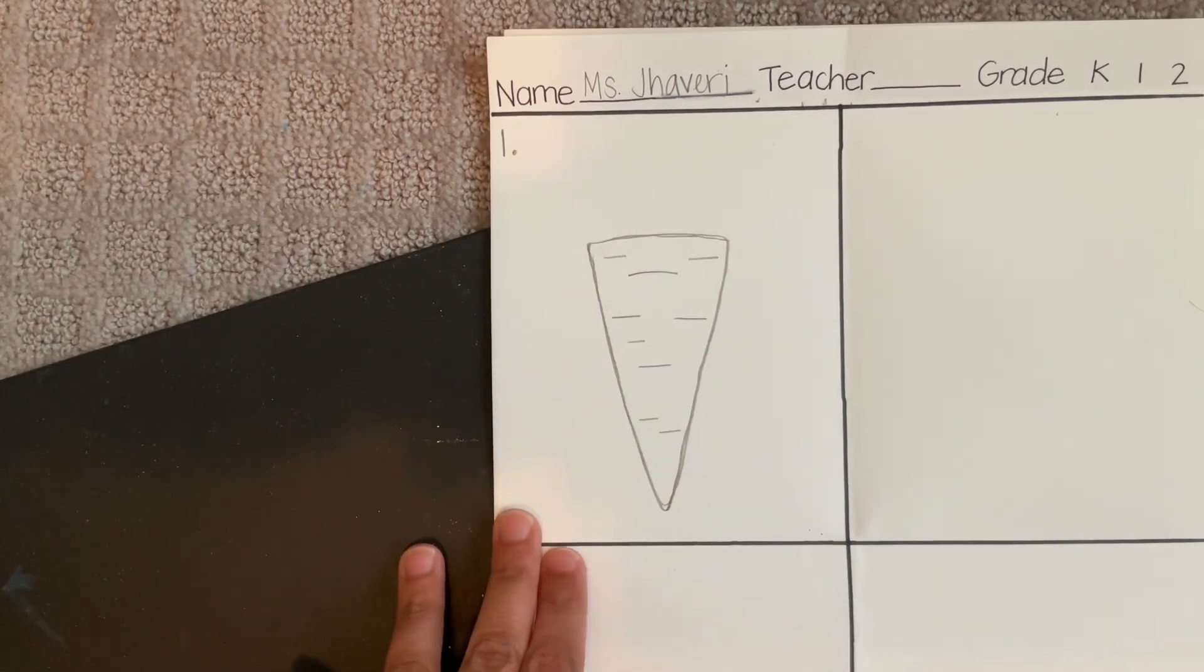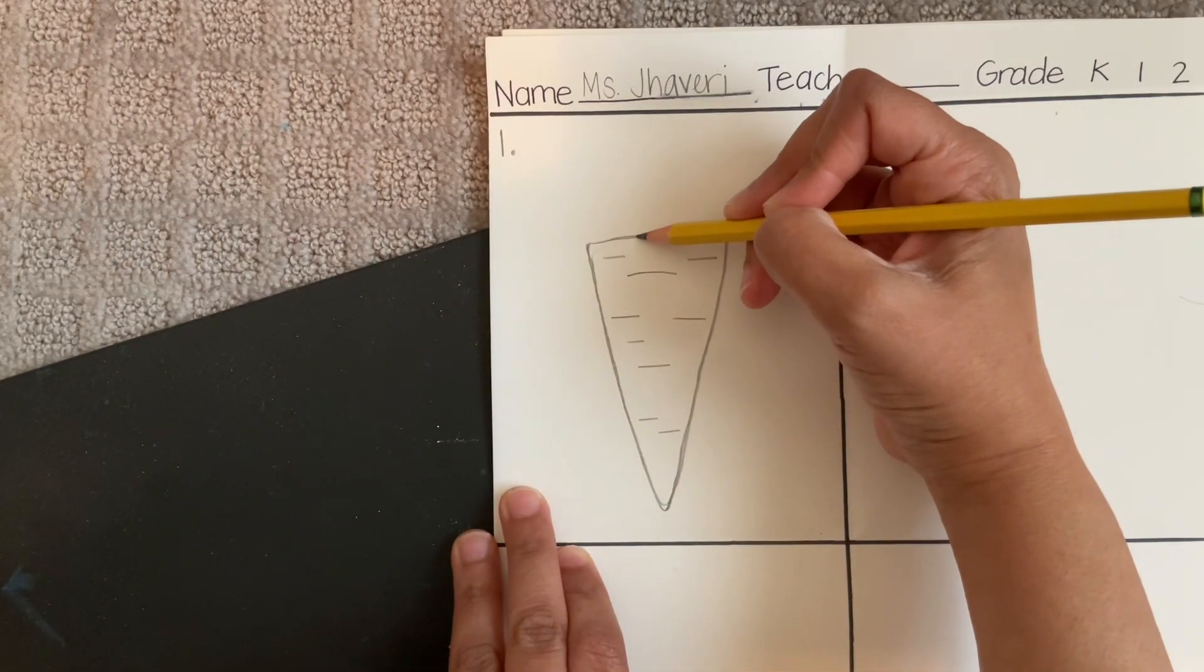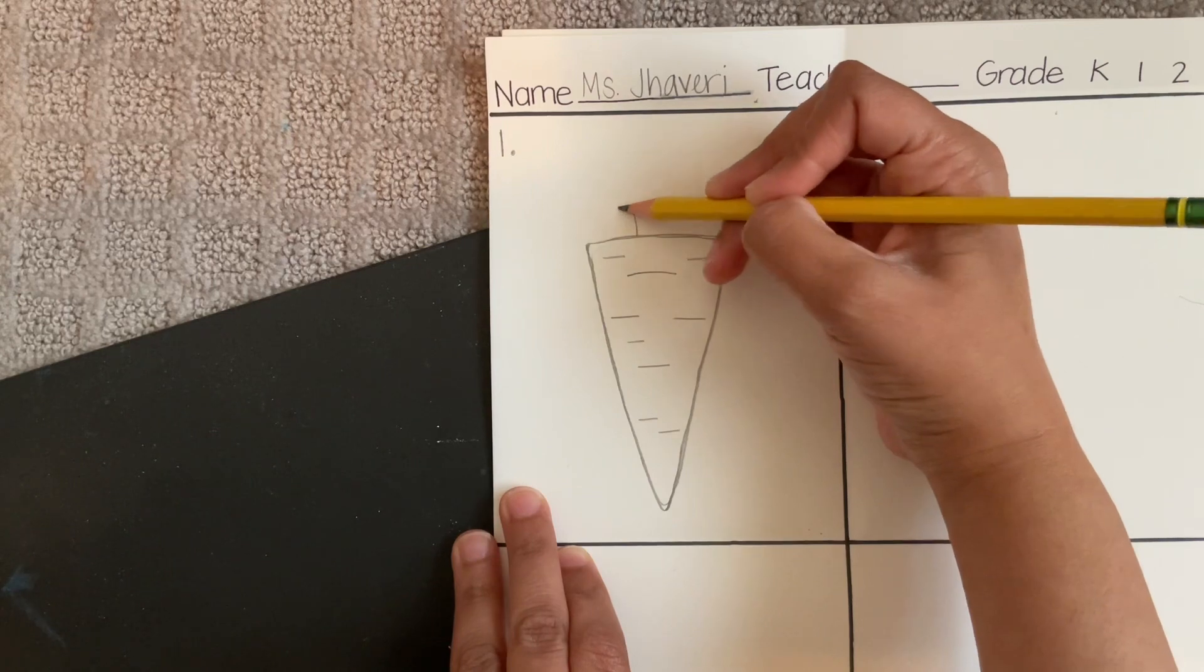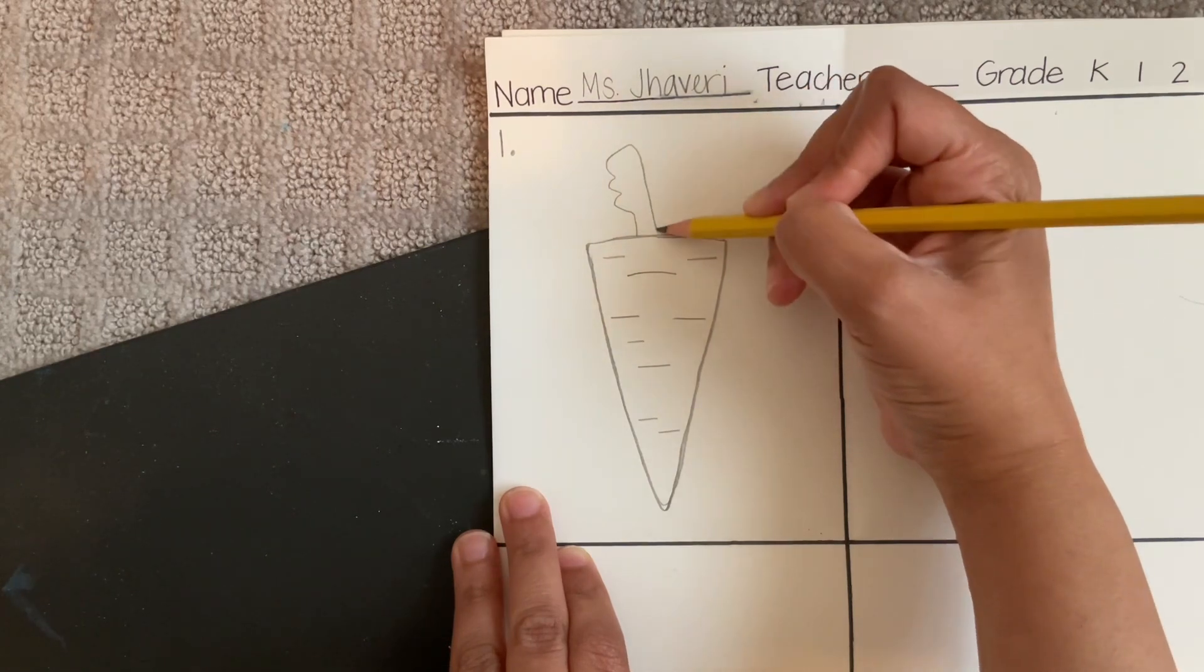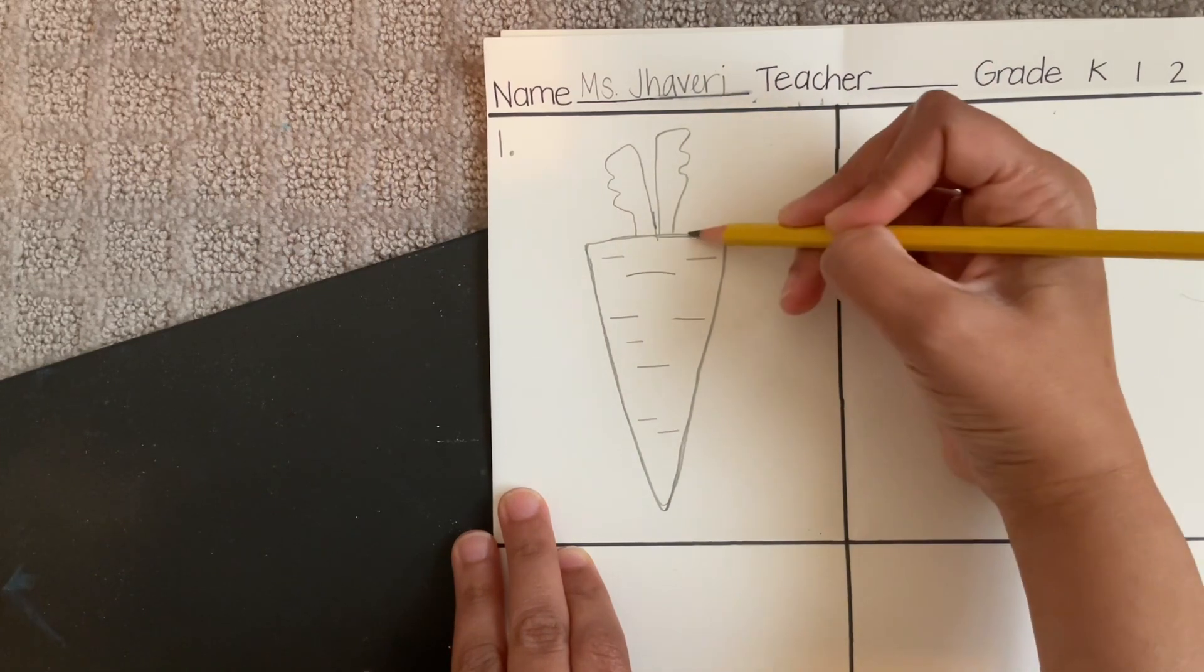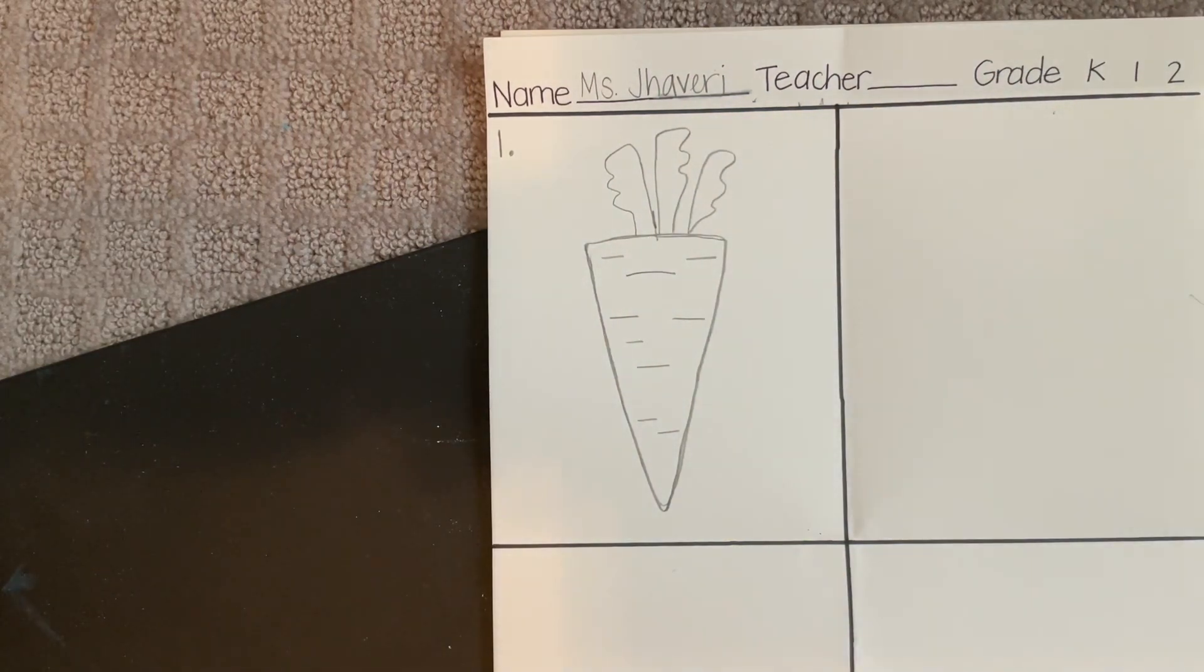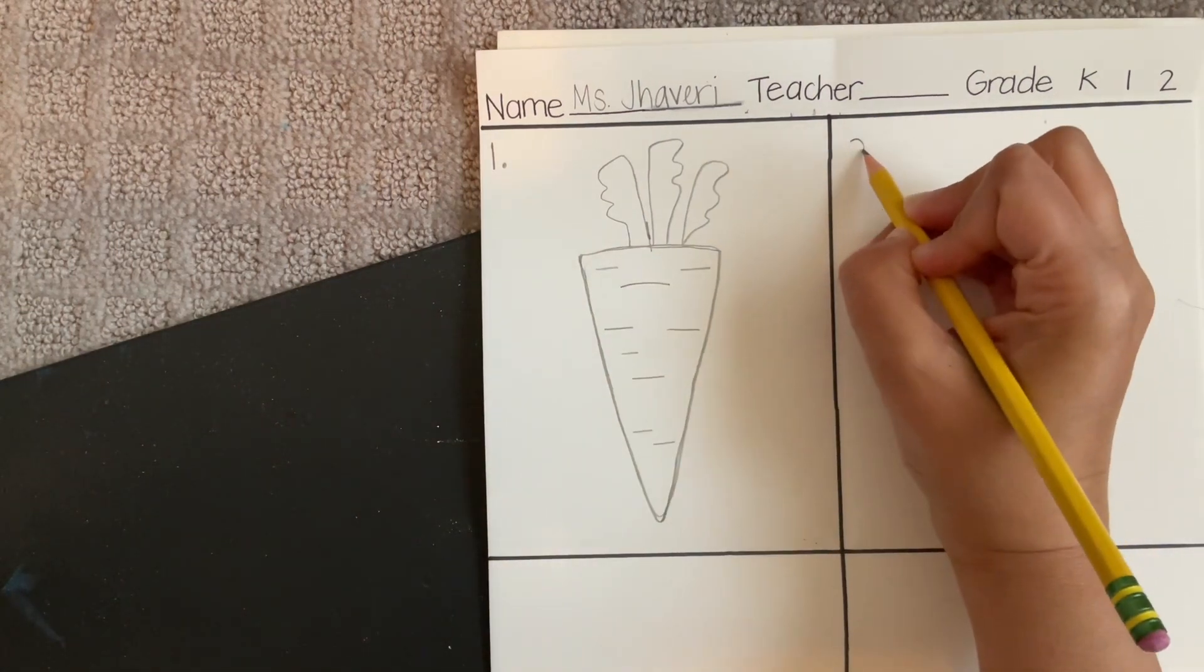Then at the top, we want to draw the leaves. So you're going to take it and just draw some curvy looking lines. Don't worry too much on, oh, it doesn't look like a carrot, or oh, I messed up. That's okay. Mistakes happen.